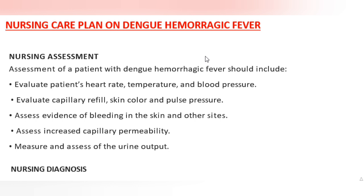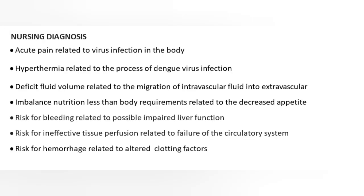Nursing Diagnoses: Acute pain related to virus infection in the body. Hyperthermia related to the process of Dengue virus infection. Deficit fluid volume related to the migration of intravascular fluid into extravascular. Imbalance nutrition less than body requirements related to decreased appetite. Risk for bleeding related to possible impaired liver function. Risk for ineffective tissue perfusion related to failure of the circulatory system. Risk for hemorrhage related to altered clotting factors.